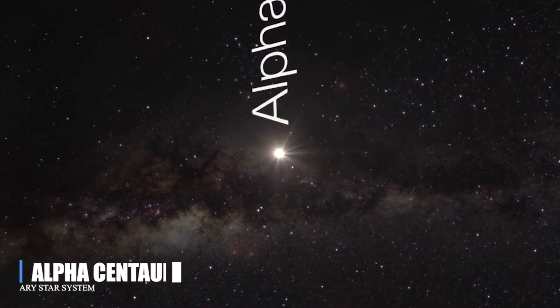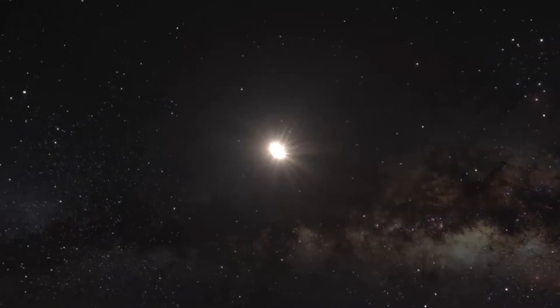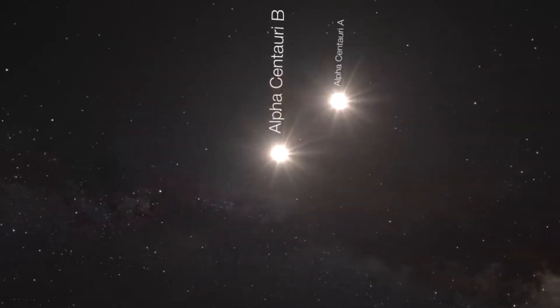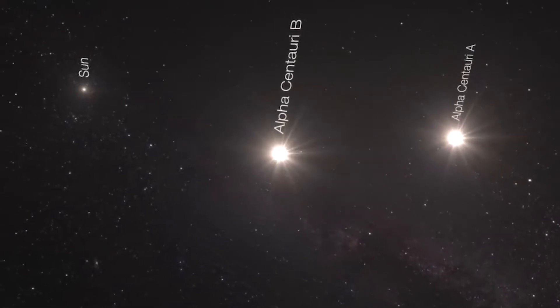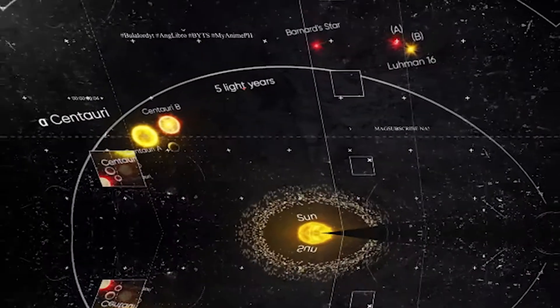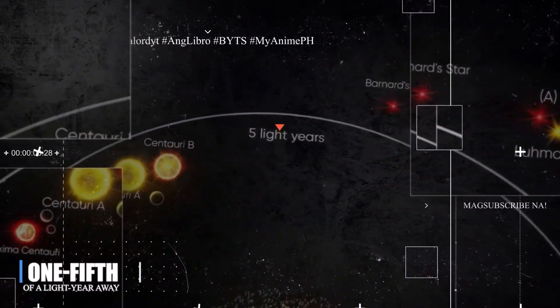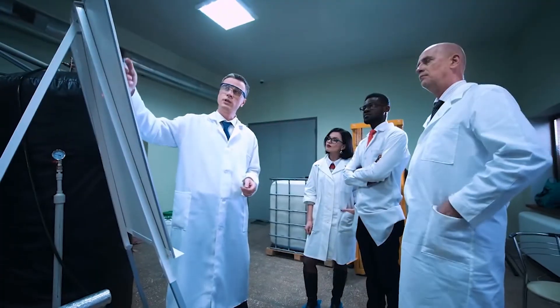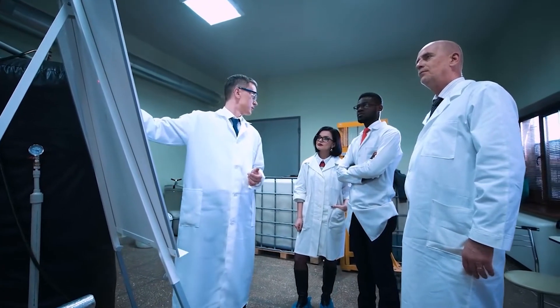The closest star system to our solar system, Alpha Centauri, is a binary star system. The two stars in the binary star system of Alpha Centauri are called Alpha Centauri A and Alpha Centauri B, respectively. The third star, Proxima Centauri, is roughly one-fifth of a light-year away, approximately 13,000 Sun-Earth distances.